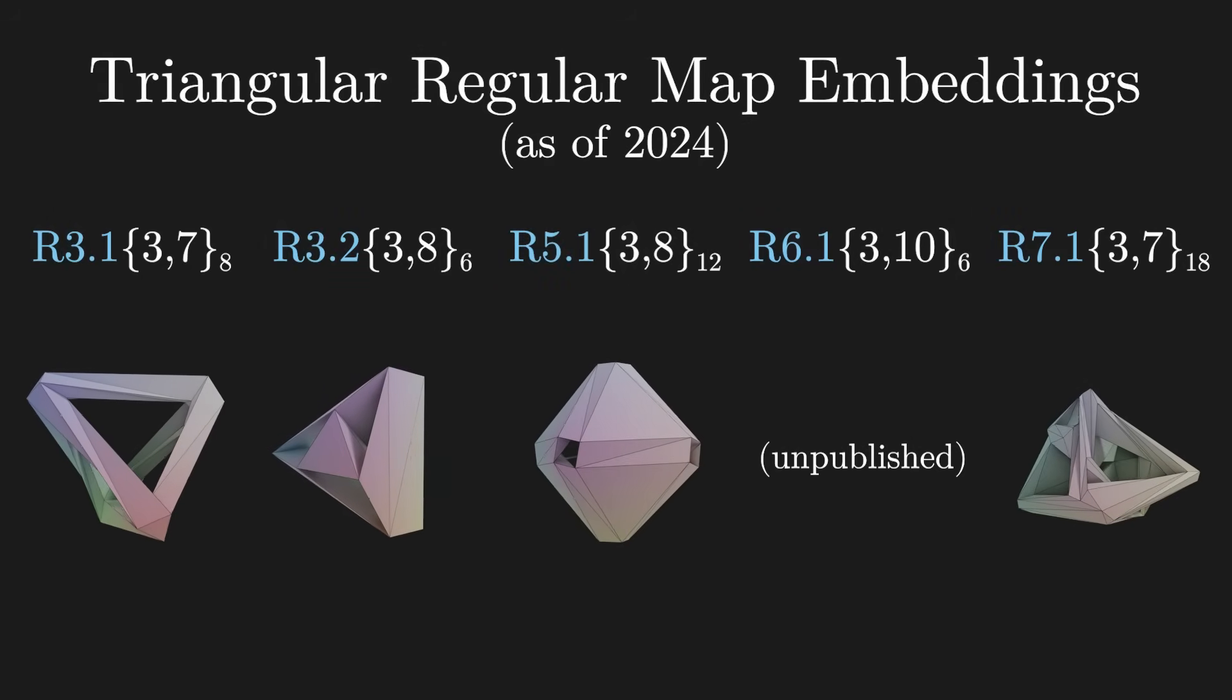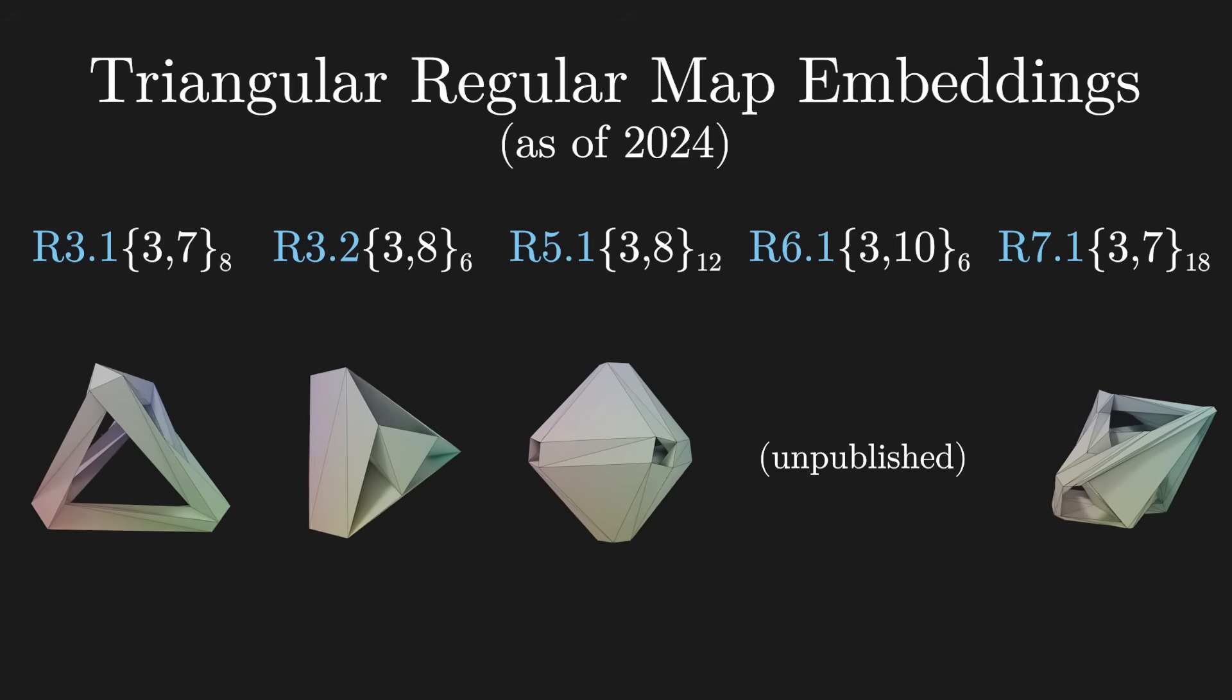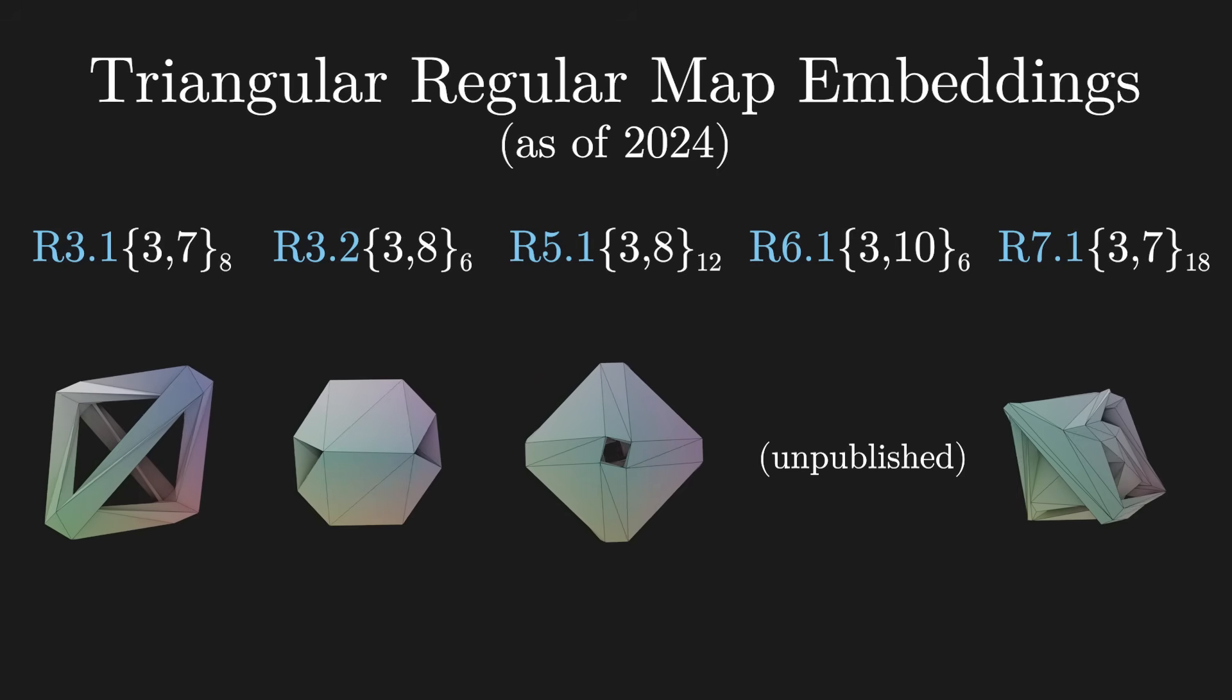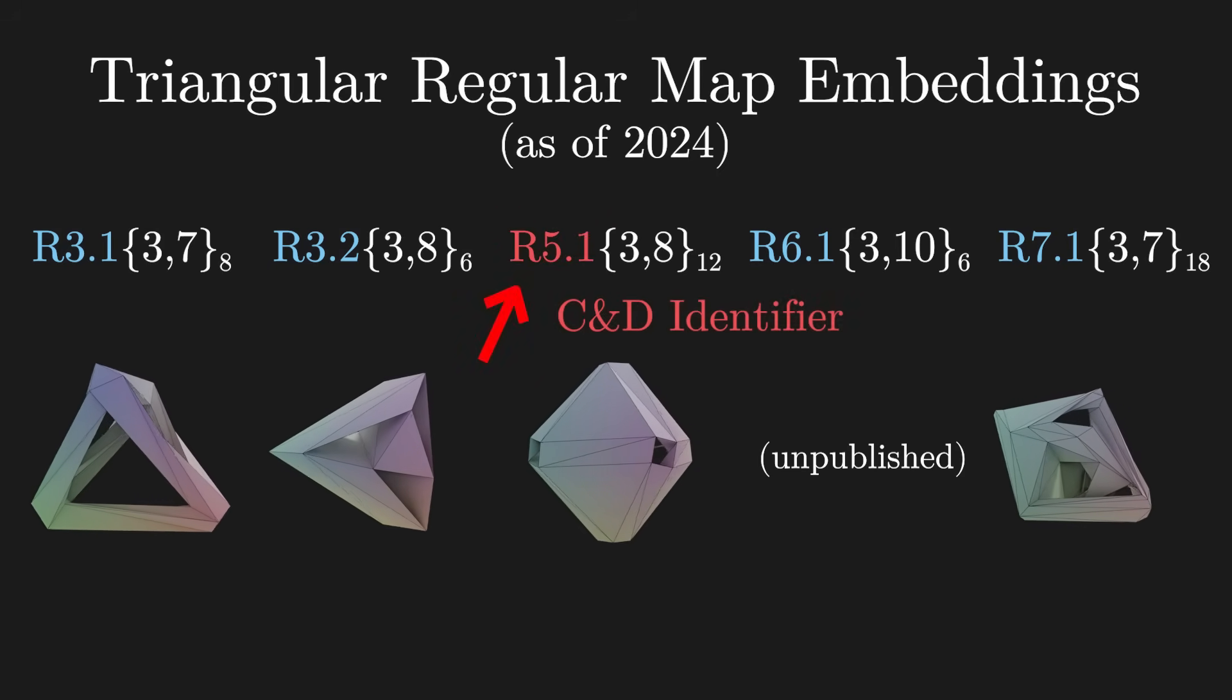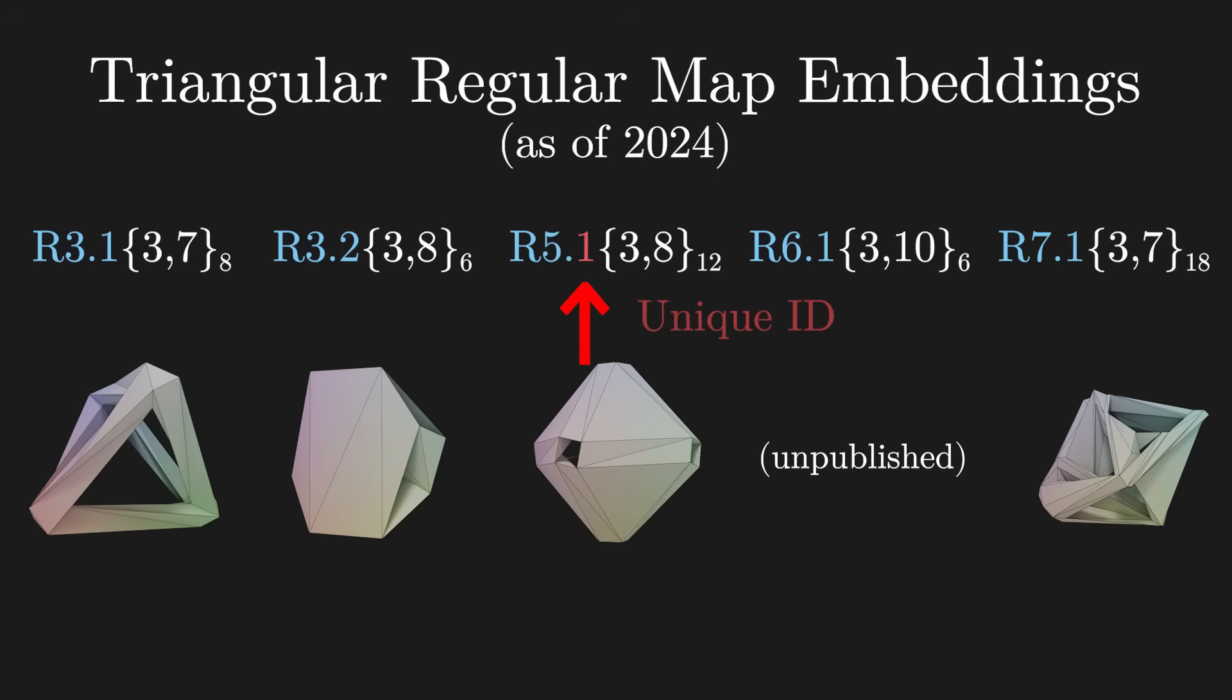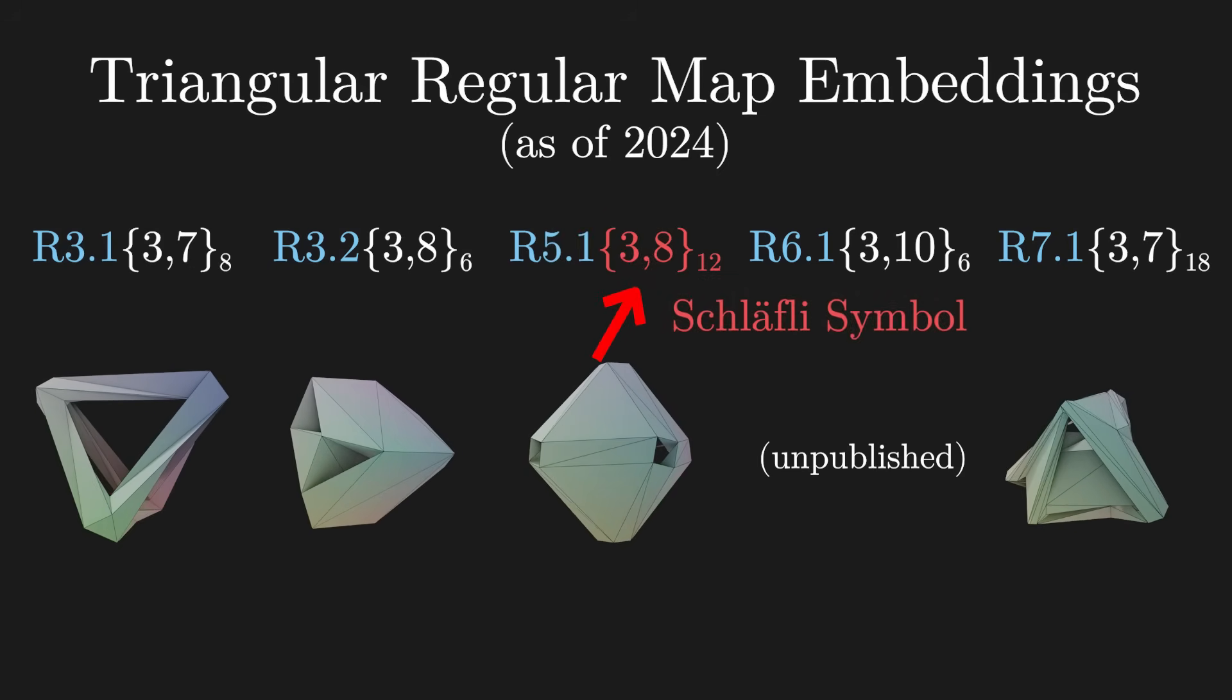There are only five known polyhedral embeddings for these triangular maps. While you watch these animations, I just want to quickly explain some of the notation. The R number is like a serial number for regular maps. The number before the dot is the genus, and the number after is a unique identifier.